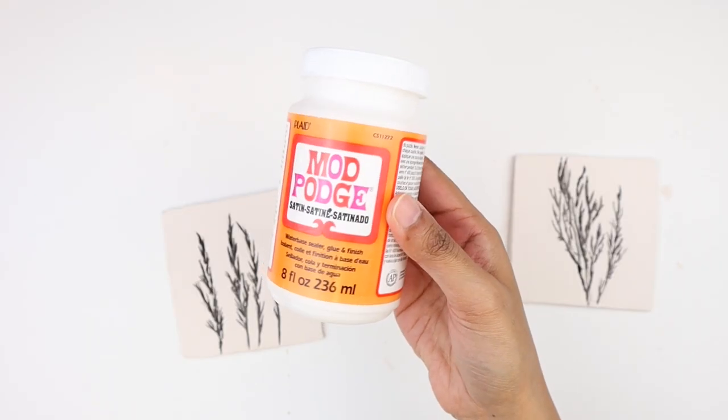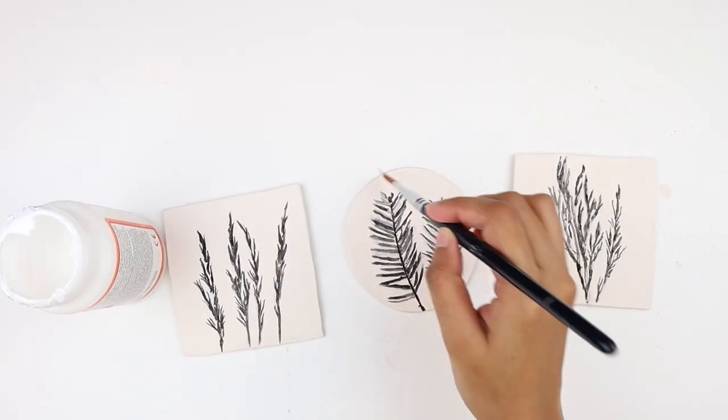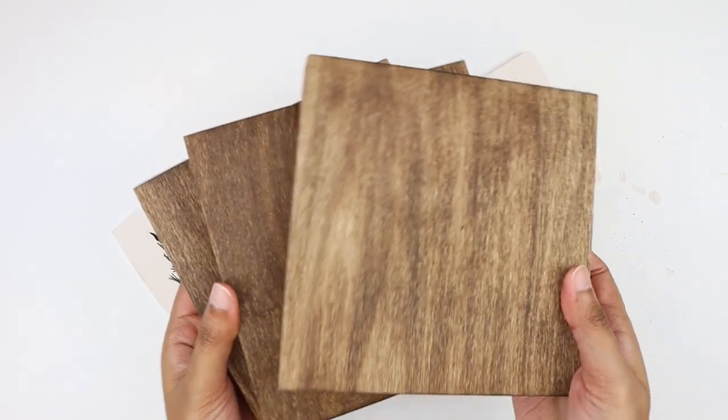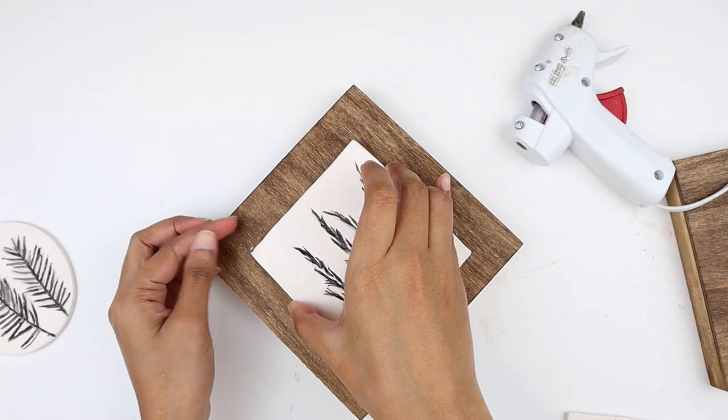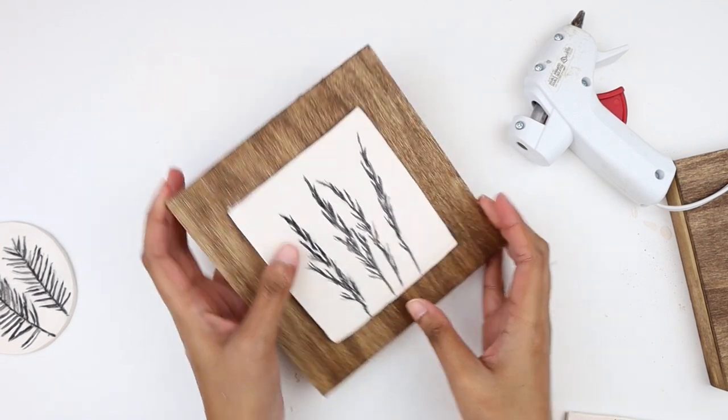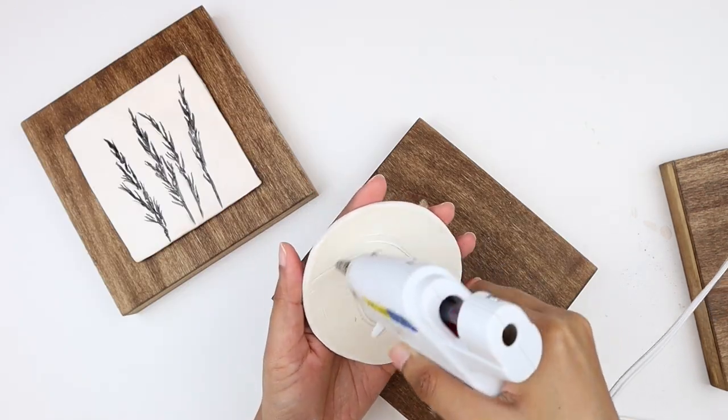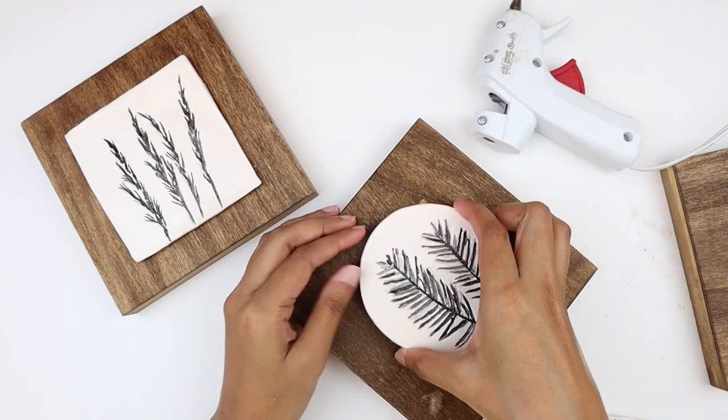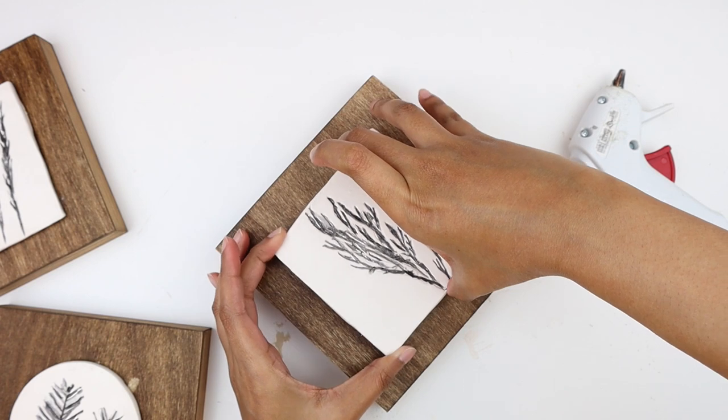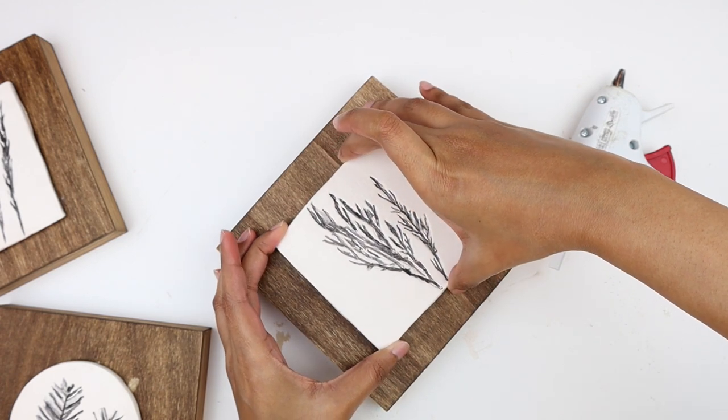Then I took this Mod Podge in satin finish and applied a generous coat on all the pieces to protect the paint. Next I grabbed the wood panels and hot glued the clay shapes right in the center. I made sure there was equal space all the way around, so I just eyeballed and glued the pieces on. This is how our clay imprint wall art turned out. I love how adorable they are. You can make as many pieces as you want and create a gallery wall with them.